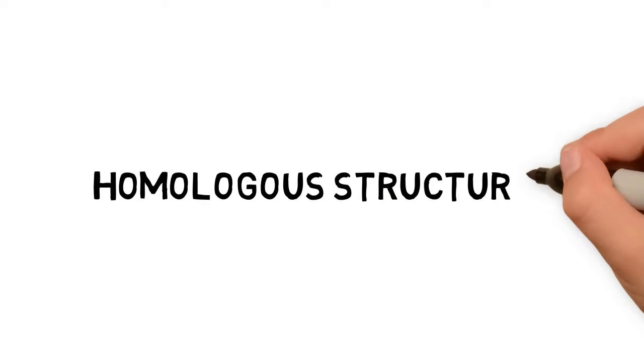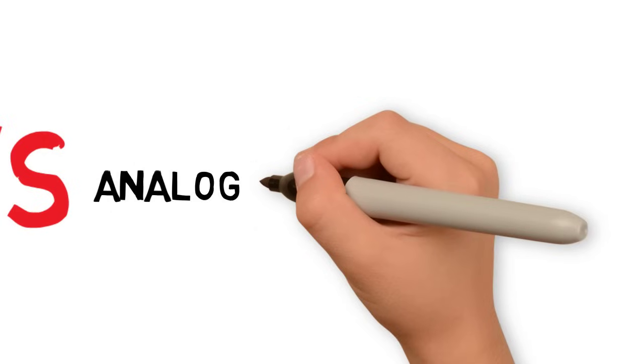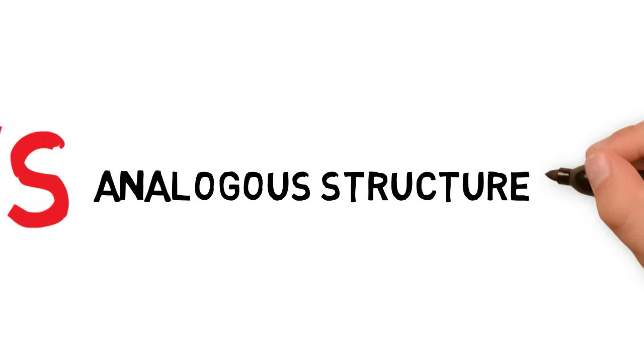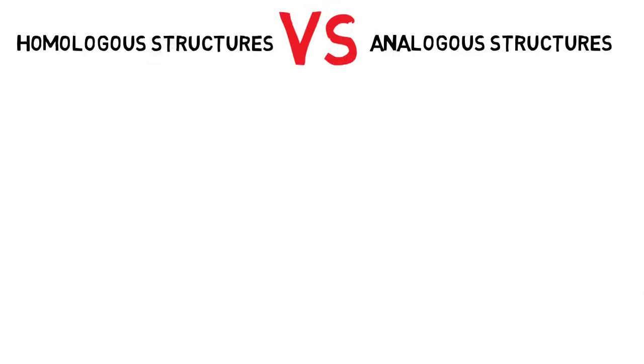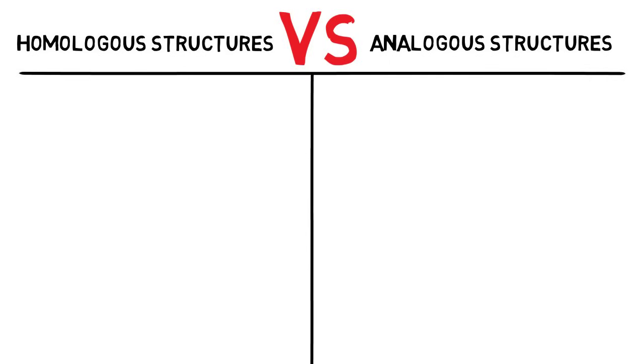Thanks for stopping by. Today we're talking about the differences between homologous structures and analogous structures. This is a topic you may come across in biology or evolution. Let's talk about homologous structures first.